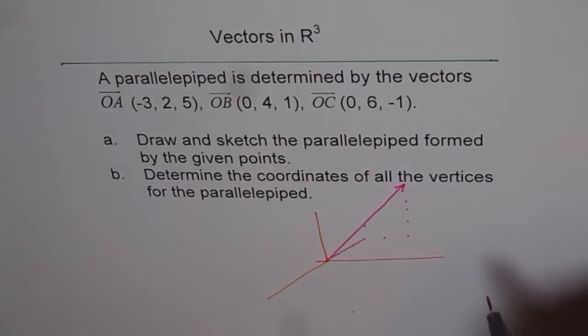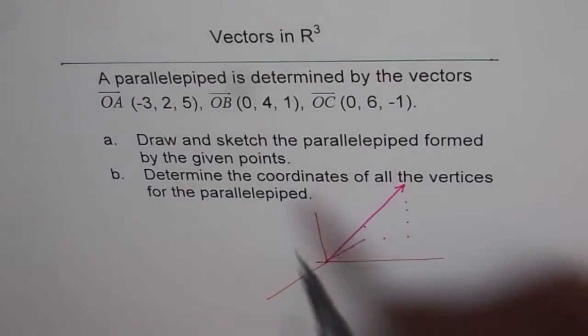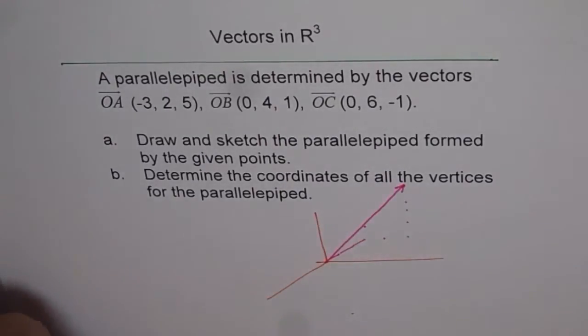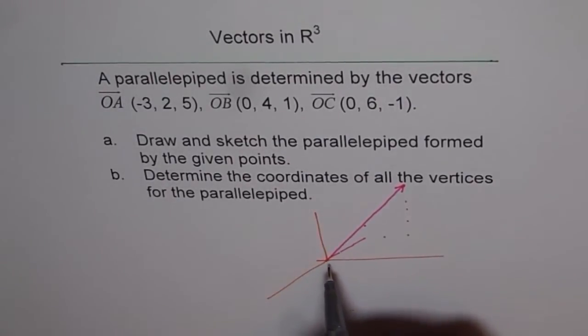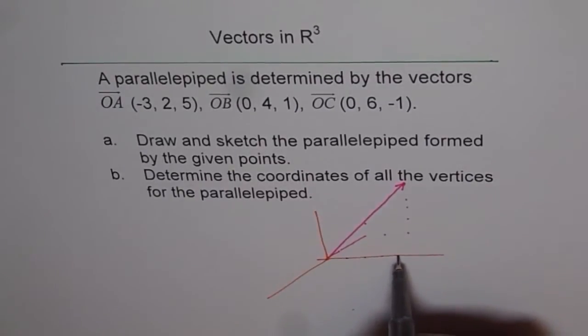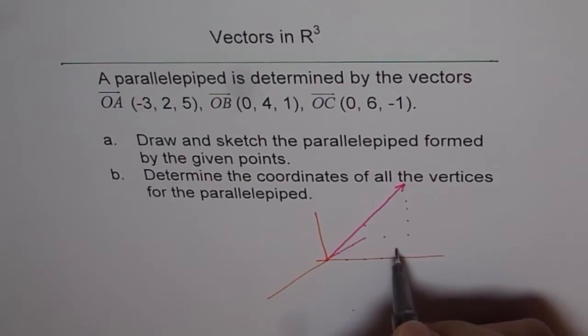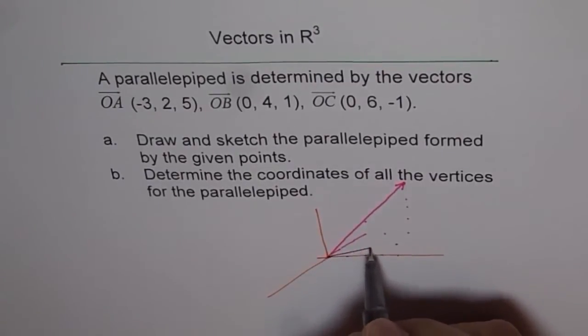Now, OB is (0, 4, 1). Let me take another ink here. 0 along x and 4 along y. So let's say, we get 1, 2, 3, 4, and then 1 up. So that is 1 up. So we get this vector, OB.